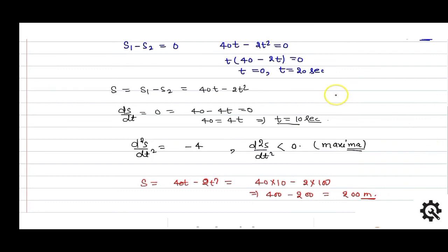When they start at t equals 0, both are at the same place. Then the first body moves ahead while the second lags behind. At t equals 20 seconds, they meet again. Between them, the maximum distance is 200 meters, meaning the first body gets 200 meters ahead of the second body.